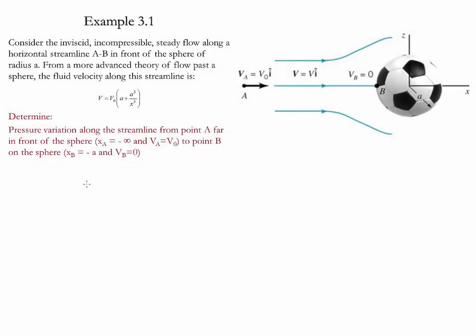Example 3.1. In this example, we consider an implicit incompressible steady flow along a horizontal streamline from point A to point B in front of a sphere of radius A. The velocity profile along the streamline is given by this equation. We need to determine the pressure variation along the streamline from point A to point B.